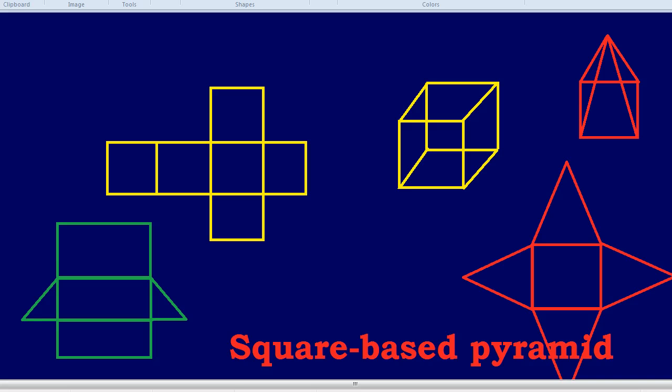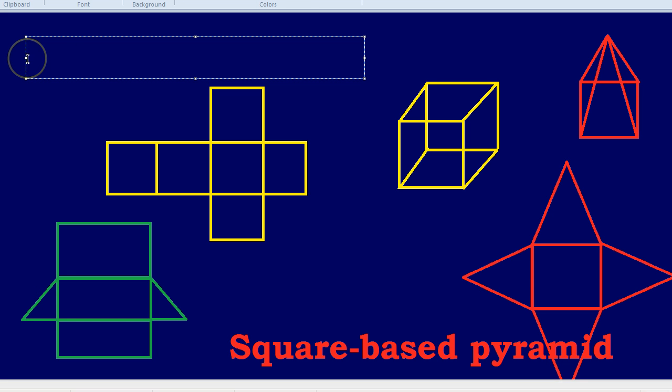What I want to show you is how 3D shapes are actually 2D shapes that have been folded up. And the 2D shapes, the drawings you can see, the blueprints, are actually called nets. So the 2D shapes are called nets.